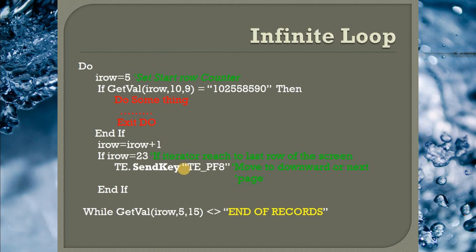So far it looks good, but there is an issue in this code — it might end up in an infinite loop. For example, suppose due to any reason the expected insurance number was not found on the screen. The reason being some previous conditions failed and the script was not able to navigate to the insurance detail screen, and because of that the script is looking for the expected value on an incorrect screen. Because of this, the while loop will keep continuing and will never terminate. If you are running this script in batch mode, the other scripts in the queue will never get a chance to execute.